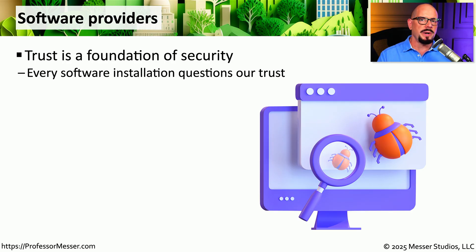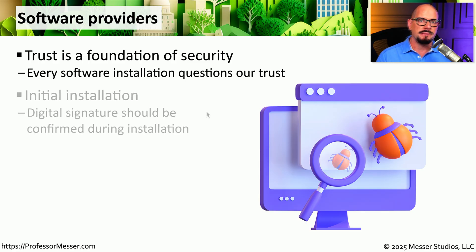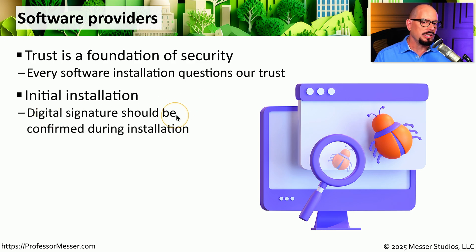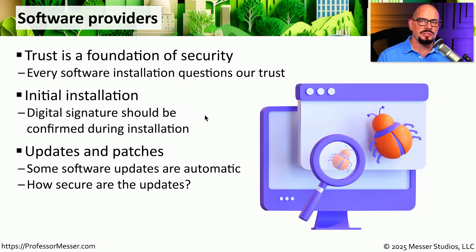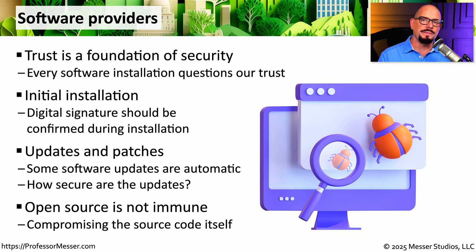Not only do we install a lot of switches, routers, and other hardware — we also install a lot of software, and each time we install software we have to trust that the code is legitimate. Fortunately, much of the software installed today includes a digital signature, so you know the code is exactly what was sent by the developer. This also becomes a concern with updates and upgrades, which are often downloaded and installed automatically. We've seen malware integrated not only into commercial software but also into open source software, where attackers can get malicious code inserted into the source itself and compiled into the software you ultimately use.